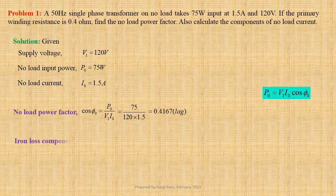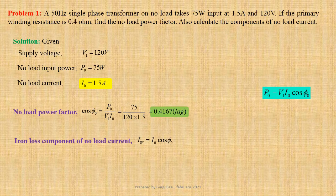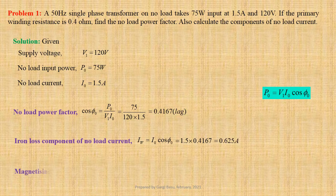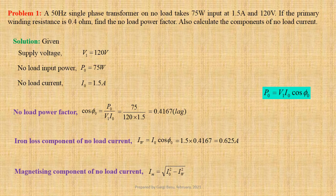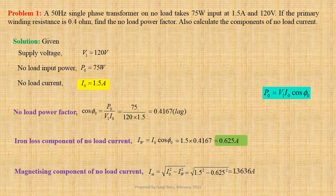Iron loss component of no load current Iw equals I0 cos phi 0, that is equal to 1.5 into 0.4167, which gives us 0.625 Ampere. Magnetizing component of no load current Im equals root over I0 square minus Iw square, that is equal to root over 1.5 square minus 0.625 square, which gives us 1.3636 Ampere.